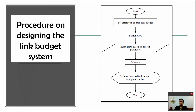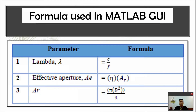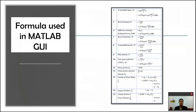As you can see here, the flowchart shows the steps we need to consider for creating the MATLAB calculator for link budget. First, we need to set the parameters of each link budget component, design the GUI, then insert inputs based on the chosen parameters, calculate, and the values of the calculator are displayed in the application. In this MATLAB GUI, we considered 15 parameters used to calculate the link budget. As you can see, there are 15 formulas used in the MATLAB GUI.